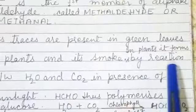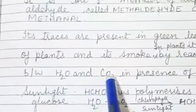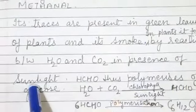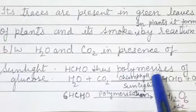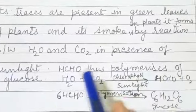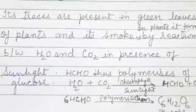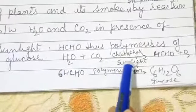In plants, it forms by reaction between water and CO2 in the presence of sunlight. Formaldehyde thus polymerizes to form glucose. For example, this is the photosynthesis reaction.